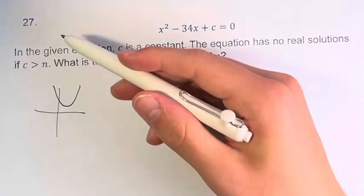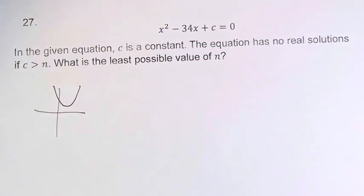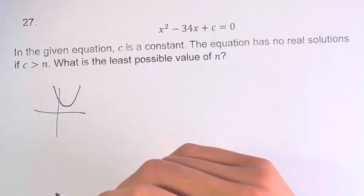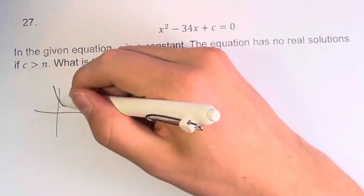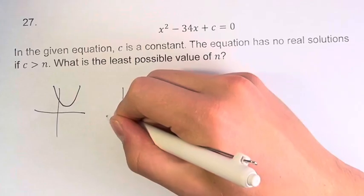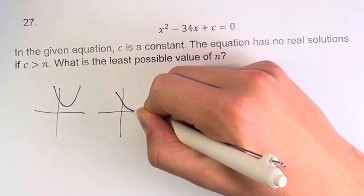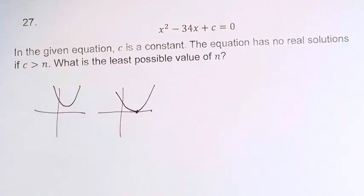When we have no real solutions, that means it's not touching the x-axis. This is true for all values up until it hits the x-axis. I'll draw another one right here, in which case we have exactly one solution.